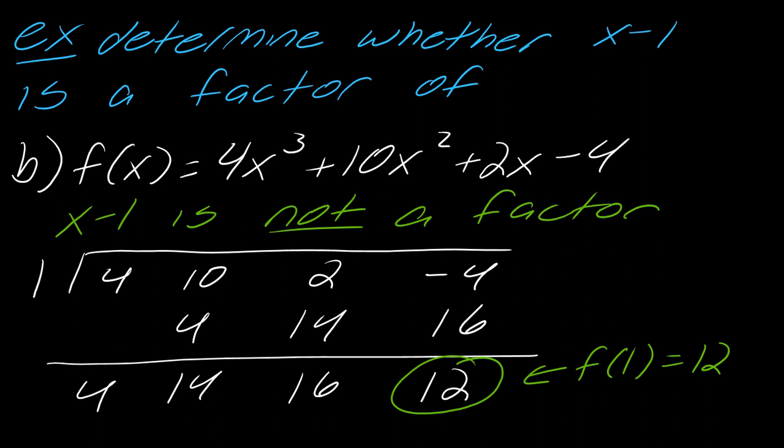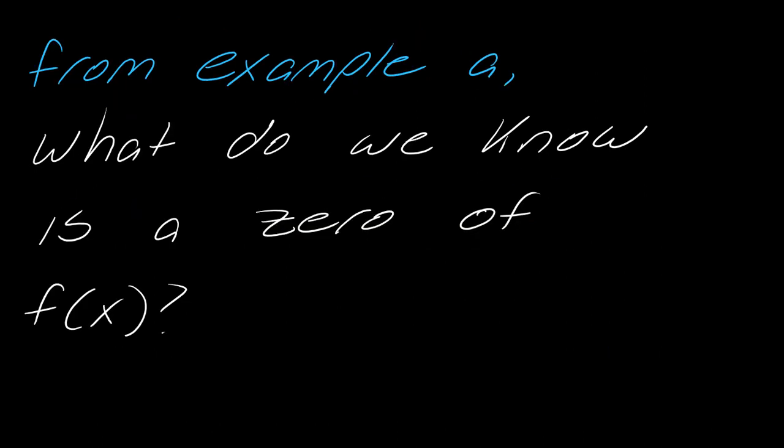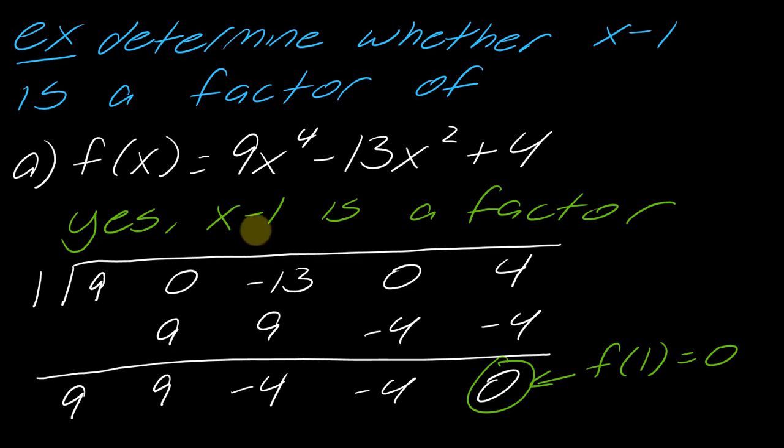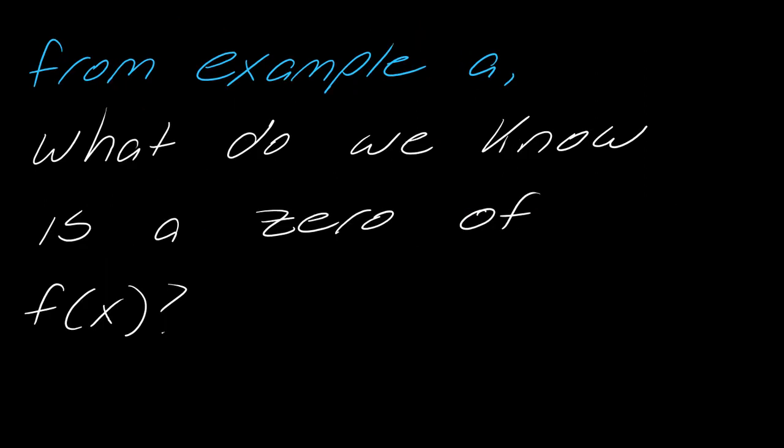Now, again, a related question. So from example A, if I know that x minus 1 is a factor, what do I also know is a 0? f(1), since f(1) equals 0, that makes 1 a 0. So you'll notice in math, there's a lot of overlap in how we think about the terms. So being a factor and being a 0, those are two related concepts. And that's very important that you just start noticing that now because it's very powerful if you understand the vocabulary on that level.